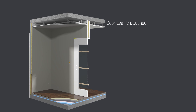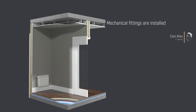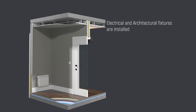Door leaf is attached and door jams are fixed. Skirtings are mounted. Second coat of paint is rolled. Mechanical fittings are installed. Electrical and architectural fixtures are installed.